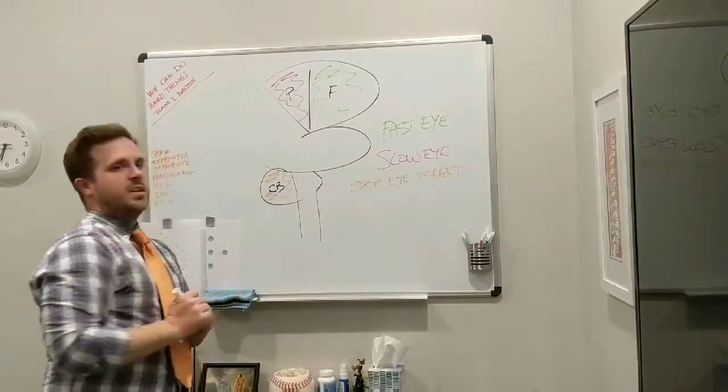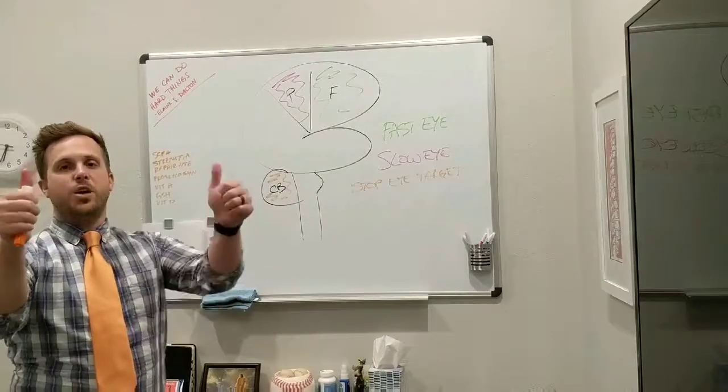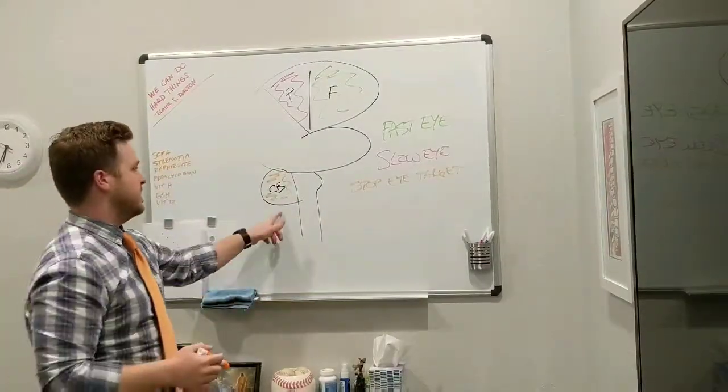So again, with fast eye movements, stopping your eyes starting from here, going to this target, and keeping your eyes on that target, that happens here in the cerebellum.